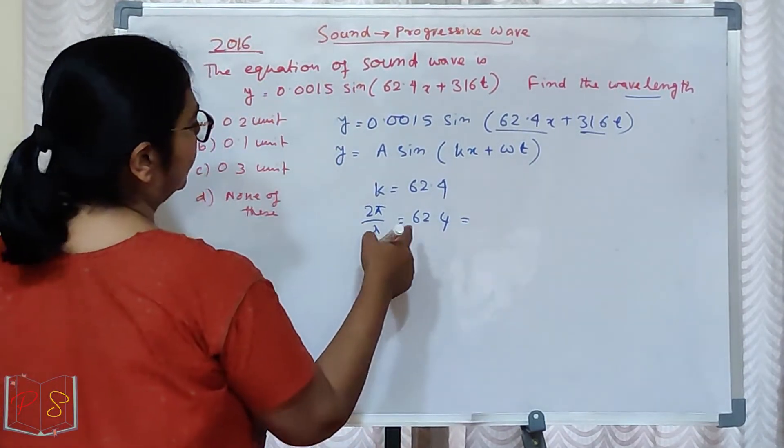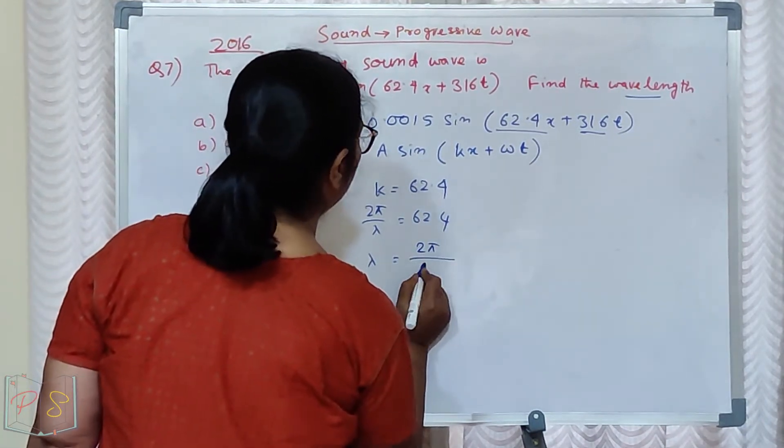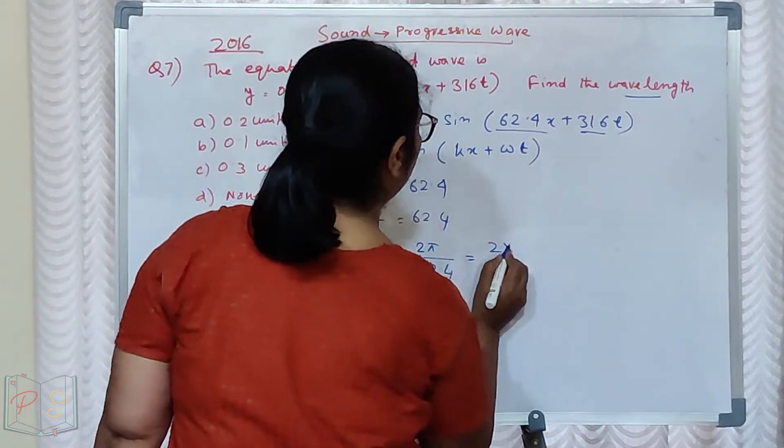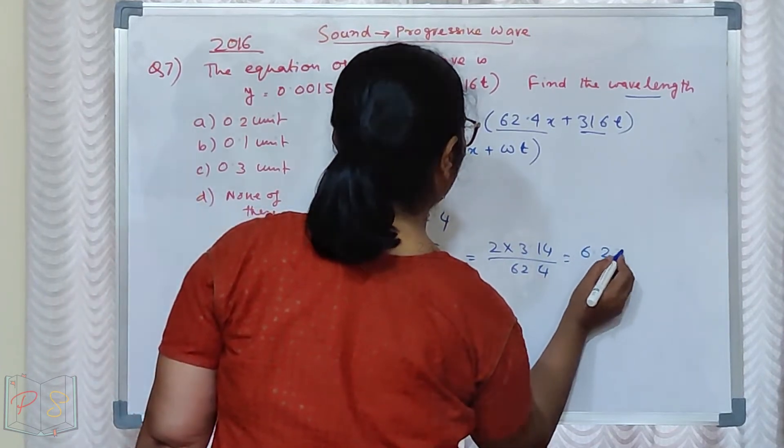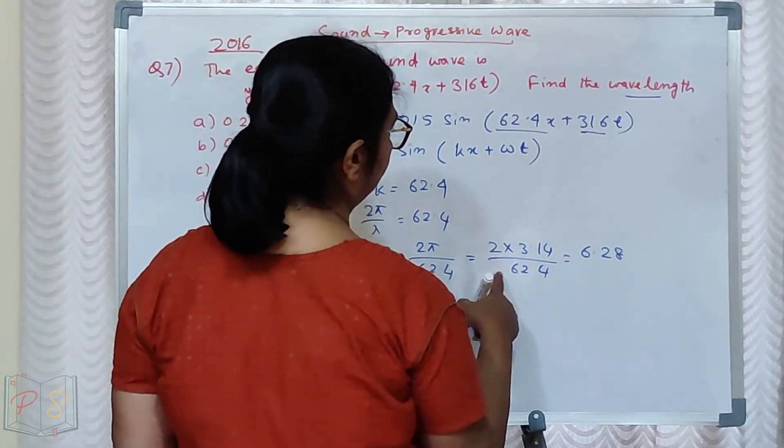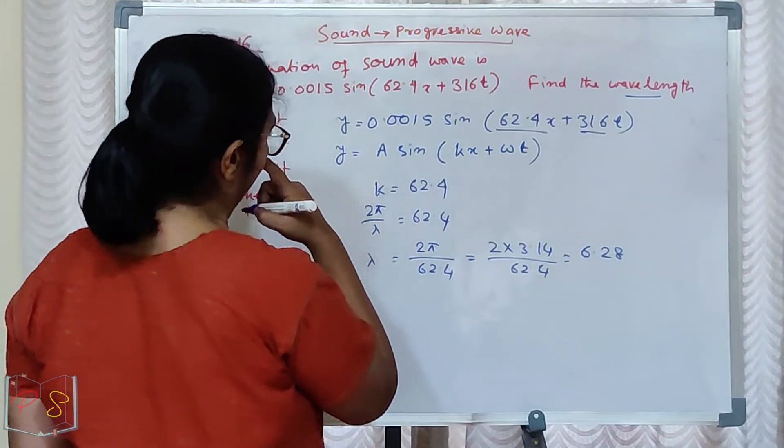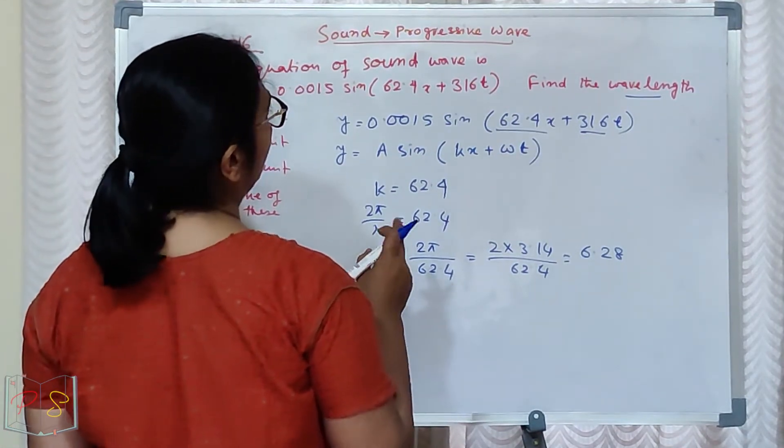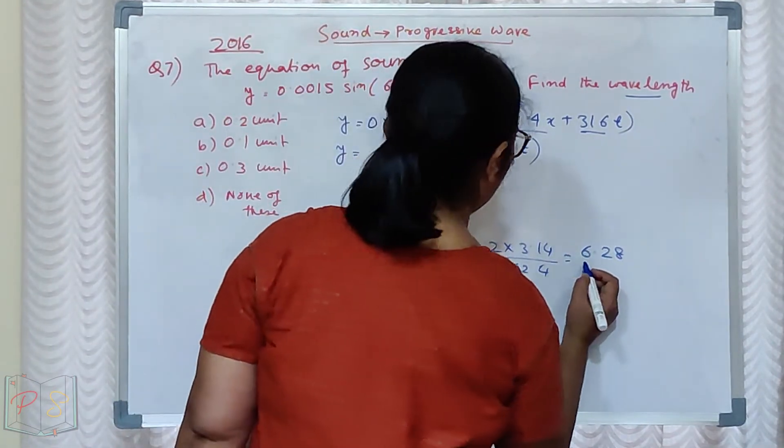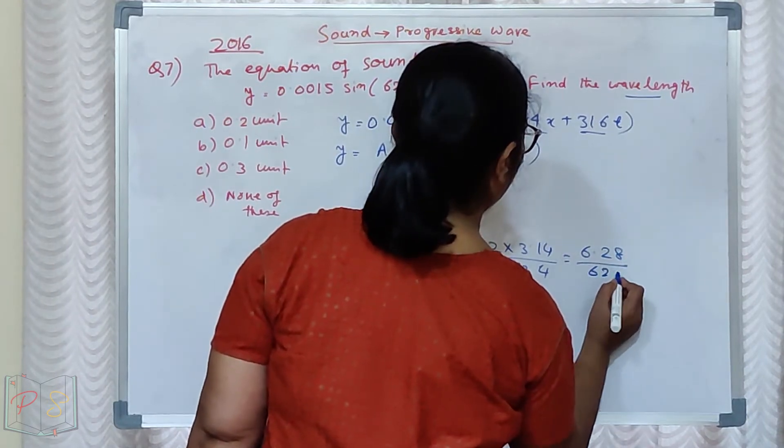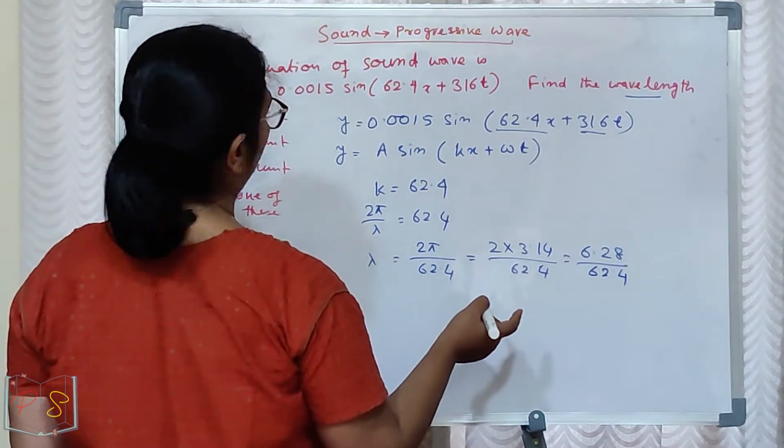Now we need to solve this. 2 pi divided by 62.4, 2 into 3.14 divided by 62.4 equal to 6.28. 6.28 divided by 62.4. So 3.14 and 62.4, it comes to 0.1 unit.